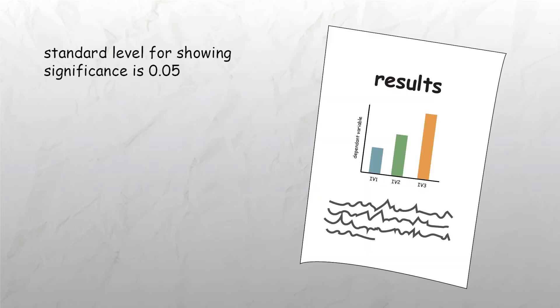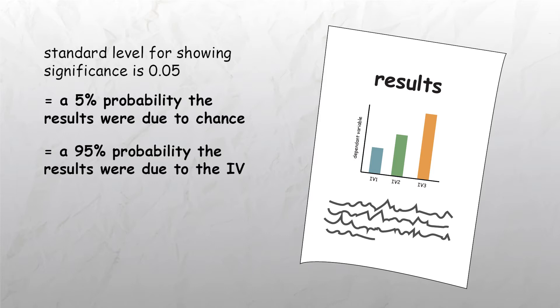The standard level for a test showing significance is 0.05, which means there is a 5% chance or less probability that the differences are due to chance factors, or conversely that there is a 95% or more probability that the differences are due to the independent variable. At this point researchers can generally accept that the results are significant.